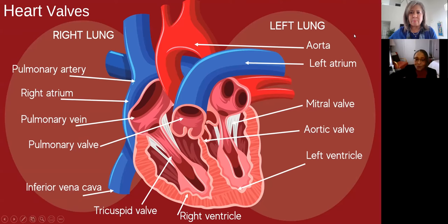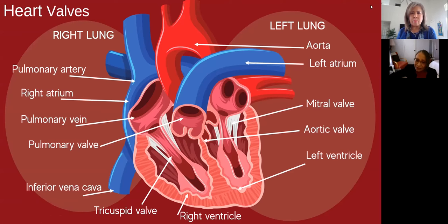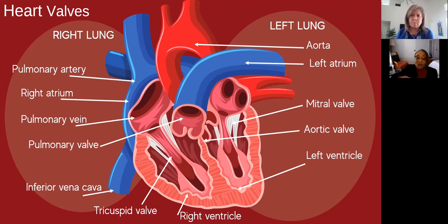Within our bodies, we have multiple circulatory systems. Some we never talk about, which is the lymph circulatory system. That system has valves, and the veins have lots of valves. But we're going to talk about particular valves within the heart. I also want to talk about some of the circulatory systems that impact the heart, and how diseases like hypertension impact directly on the valves.